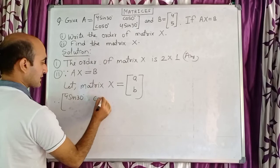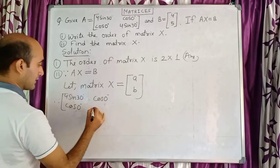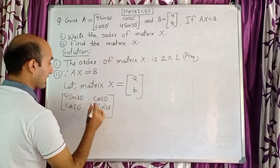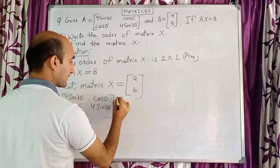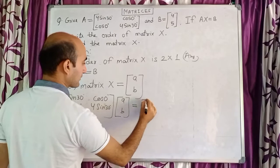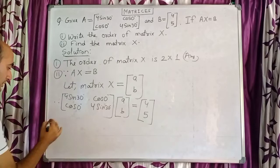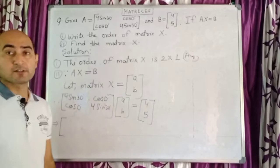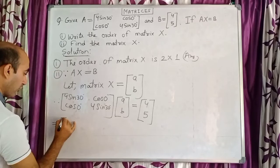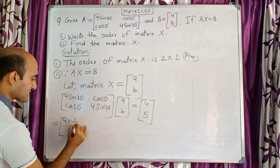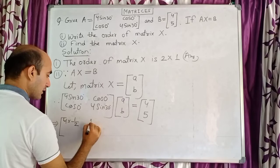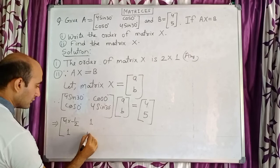Now put the respective values: matrix A is [4 sin 30°, cos 0°; cos 0°, 4 sin 30°], matrix X is [a; b], and this equals B which is [4; 5]. Next, substitute the trigonometric values: sin 30° = 1/2 (learned in class 9), cos 0° = 1.